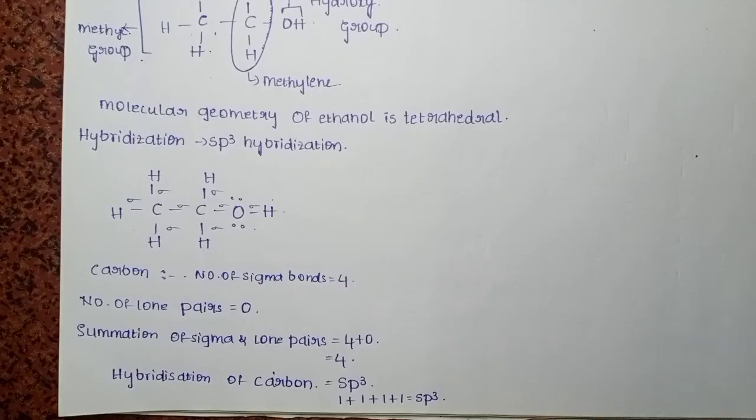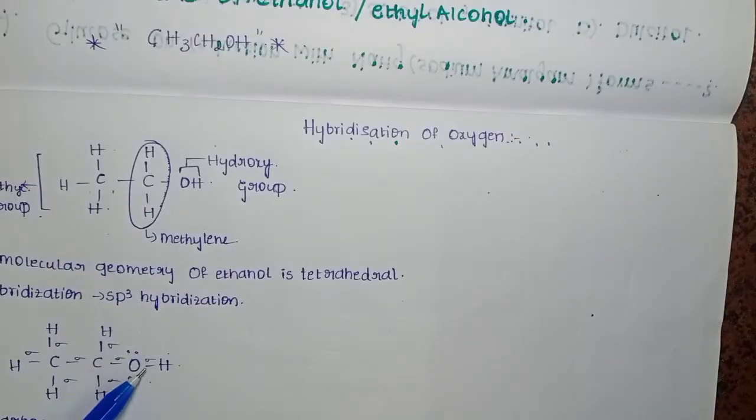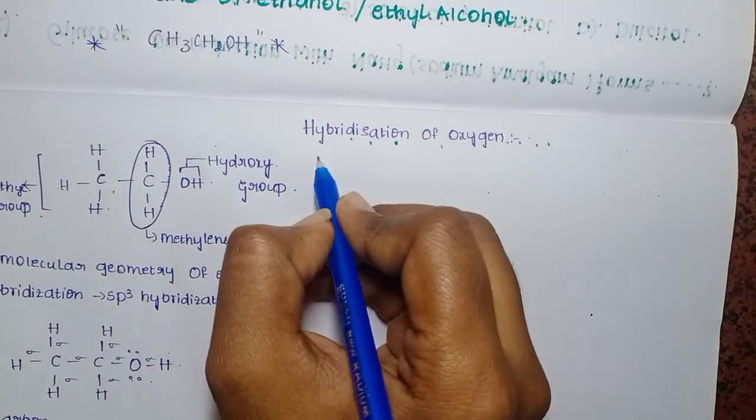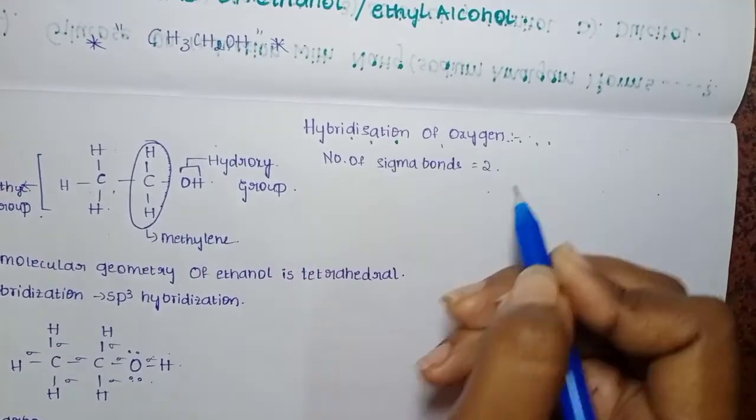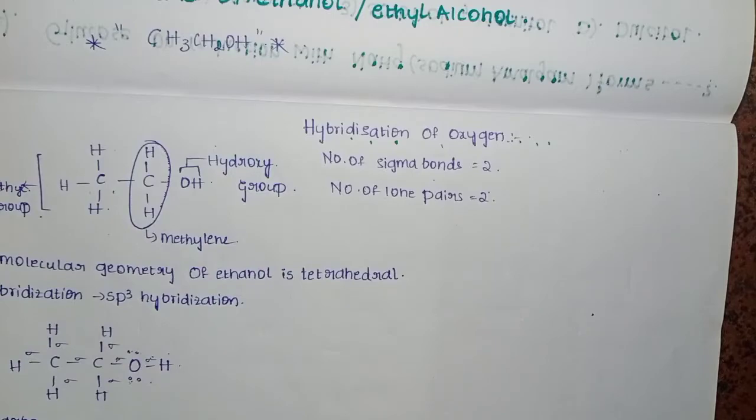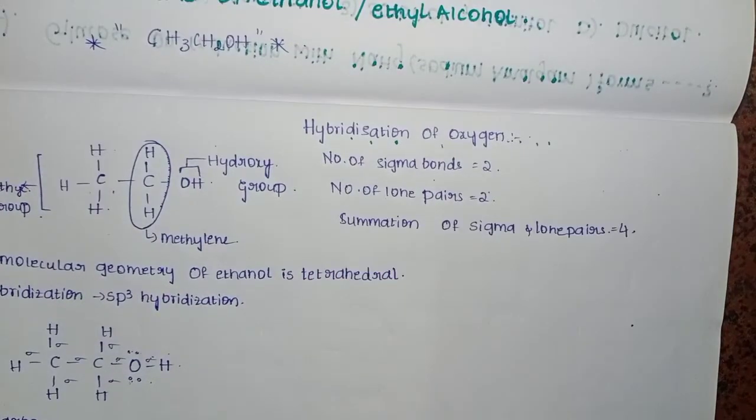The hybridization of the oxygen: there are two lone pairs and two sigma bonds. The number of lone pairs of the oxygen is equal to two lone pairs - this is one lone pair and this is the second lone pair. Sigma bonds and lone pairs is four, so this oxygen also follows SP3 hybridization.